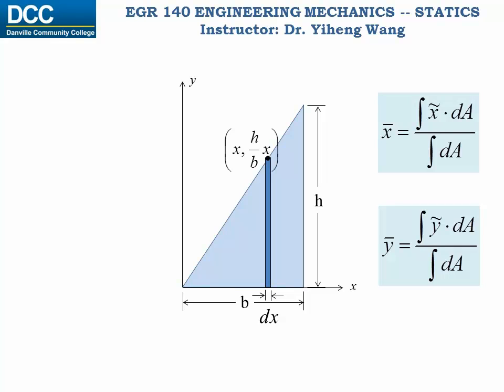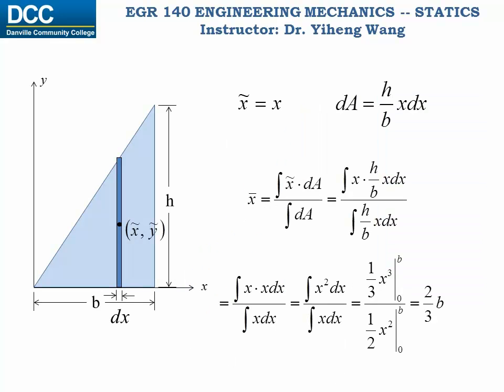We know that its centroid is right here at the center. We can tell that x tilde equals x, and dA equals the area of the rectangle, which is the height, h over b times x, times the width, which is dx. We plug these into the first equation. Therefore x bar equals two thirds b, just like we got using the first approach. But here, as you can see, we only need to integrate over one variable, x.